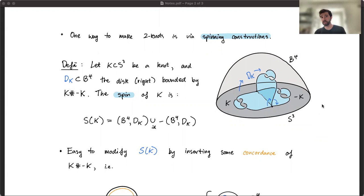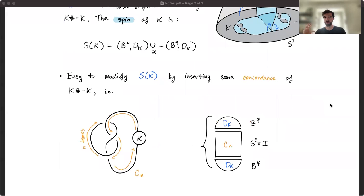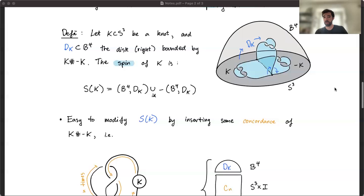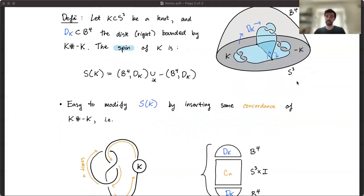So if you do that, you'll get usually what's called the spin of the knot. One reason that I like this particular description of it is that it's clear that you can modify this by inserting some sort of concordance. So if you have a self-concordance of a knot connected sum with its mirror, you could just paste that in there and you'd have some new embedding of a 2-sphere in 4-sphere.